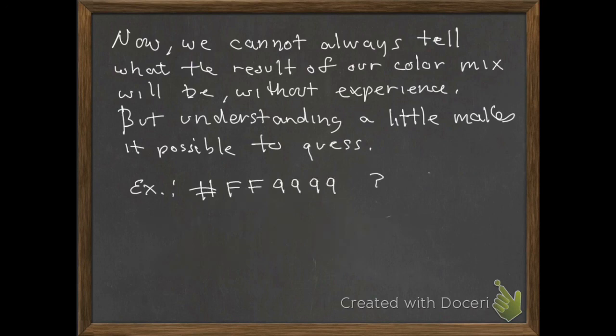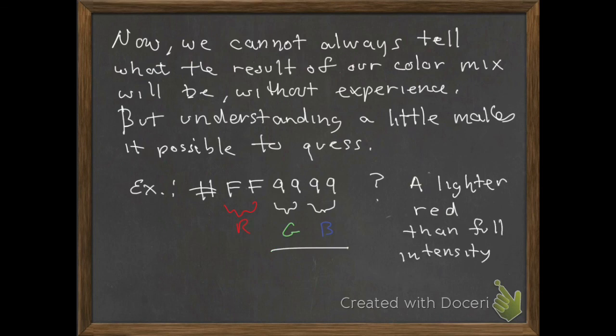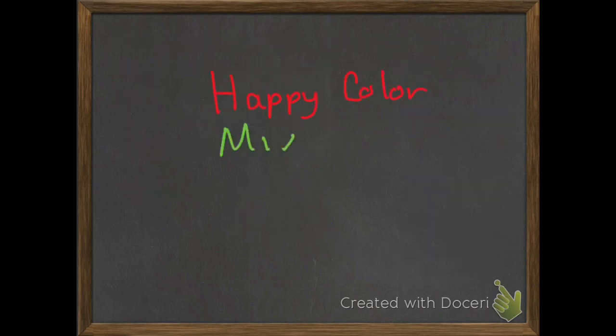And what about FF9999? Again, red is turned on at full intensity, and green and blue are turned on in the same amount. We're adding a little bit of gray, gray contains white, to our red. And that's going to lighten up our red a little bit. So we're going to have a red that is a little bit lighter than a full intensity red, which is about all we can really say by looking at that, or without having experience. So happy color mixing with hexadecimal numbers.